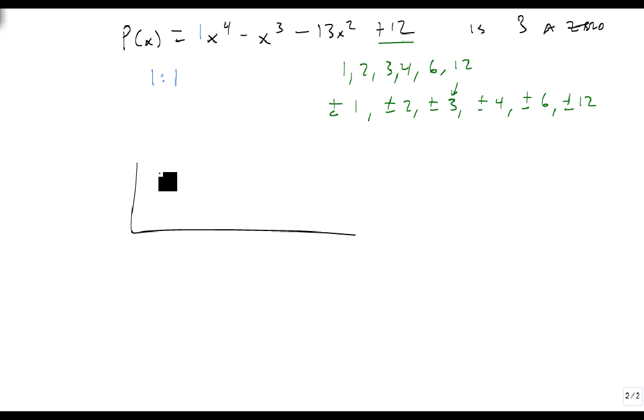So we can set up our long division. We get 1, minus 1, minus 13, 0, and 12. And when we plug 3 in, it's going to be a 1, 2, 6, that's a minus 7, that's a minus 21. 3 times minus 21 is minus 63. 12 minus 63 is minus 51.